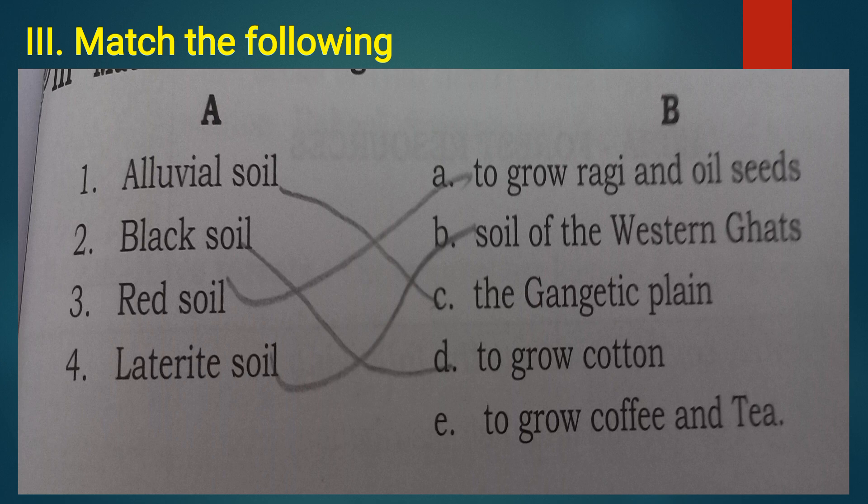So, let's match. First one, alluvial soil. C, the Gangetic plain. Second one, black soil. And the option is D, to grow cotton. Third one, red soil. Option A, to grow ragi and oil seeds. Fourth one, laterite soil. And the option is B, soil of the western ghats.